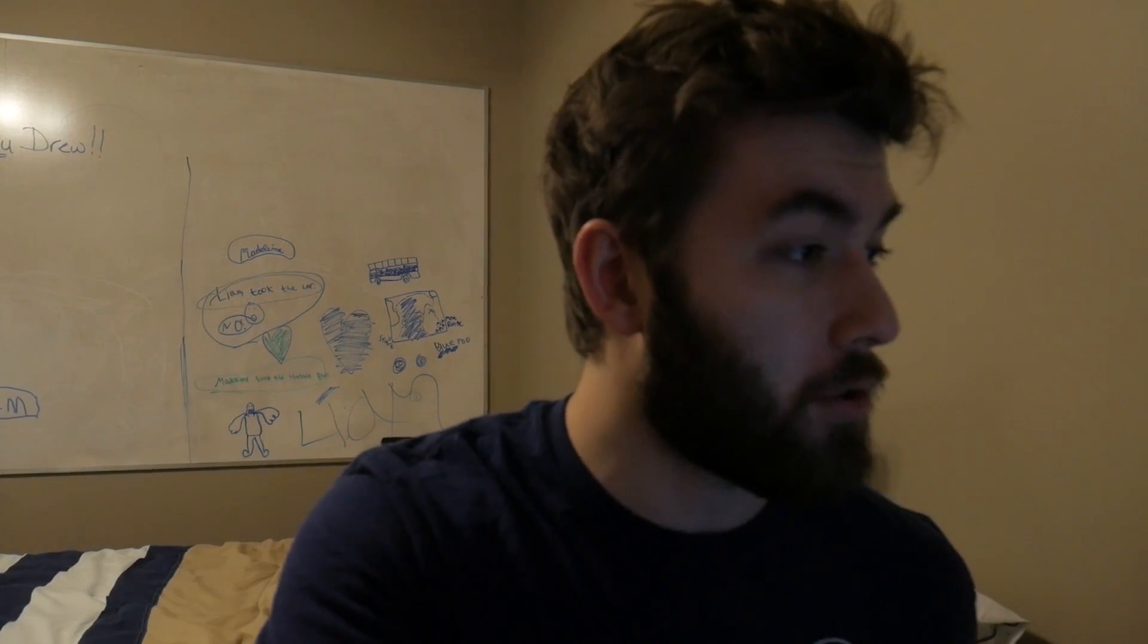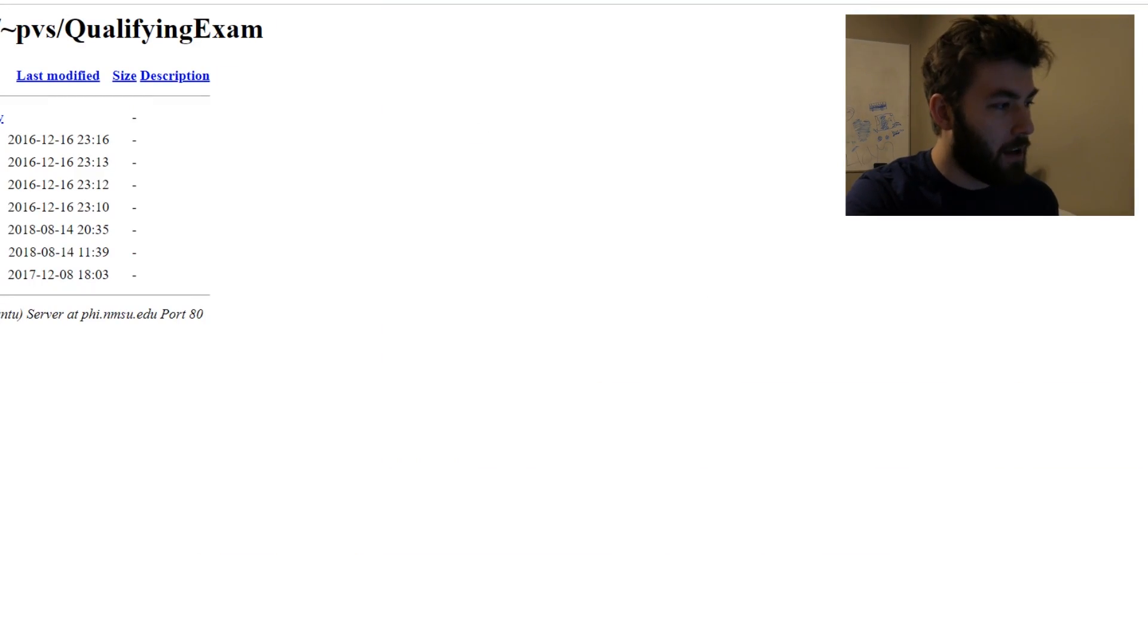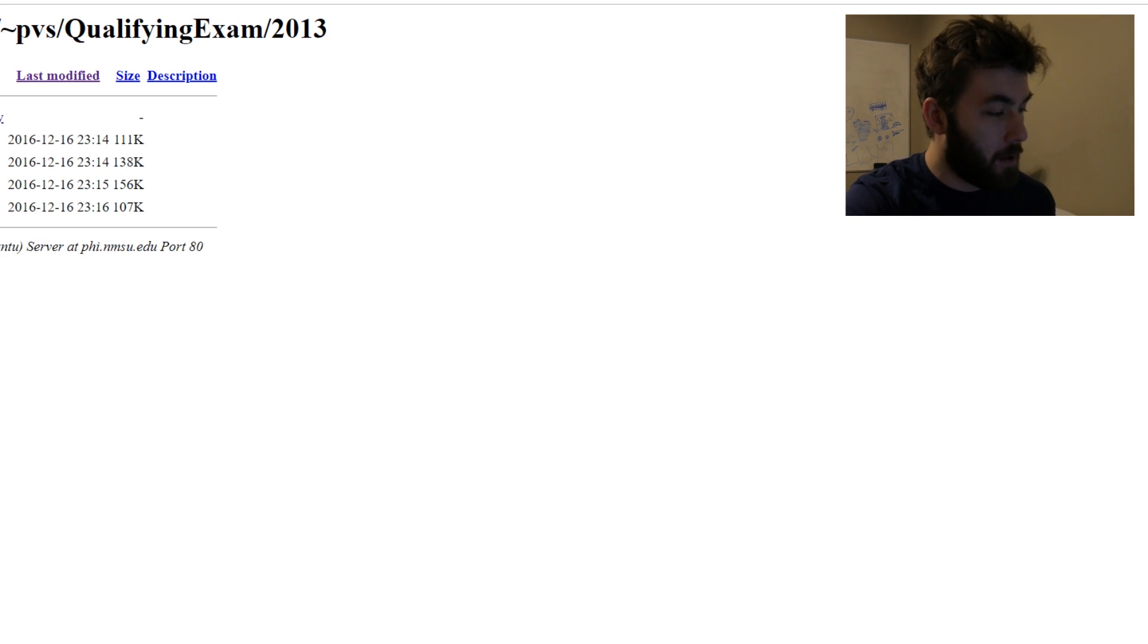NMSU was nice enough to give us a bunch of previous qualifying exams to prepare us with, so that's the main way that I'm going to be studying. As you can see here it has it filed by the different years. Click on 2013 and it has different exams for classical mechanics, E and M, I assume MP means modern physics, and thermodynamics.